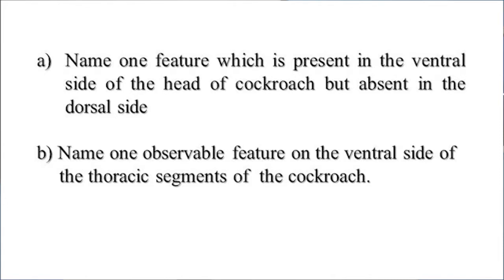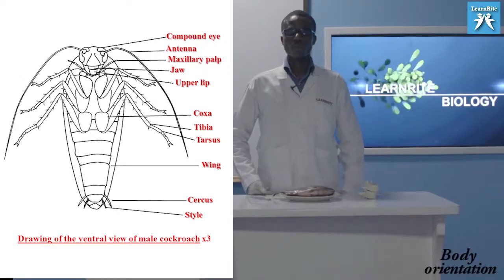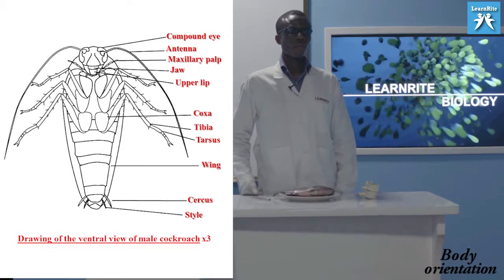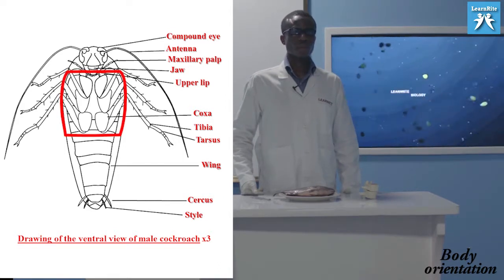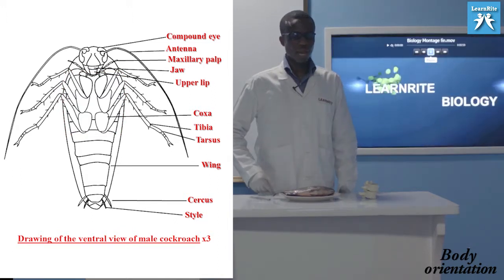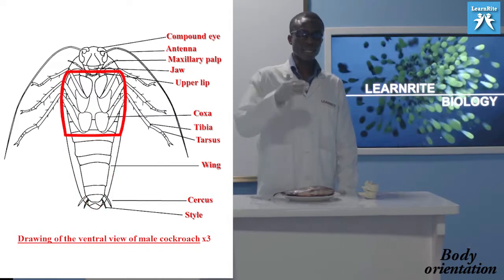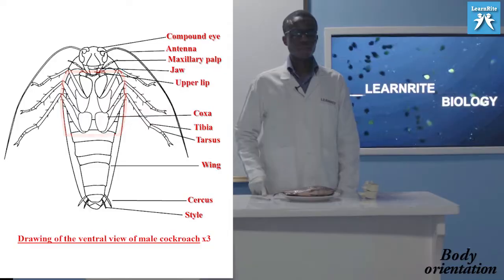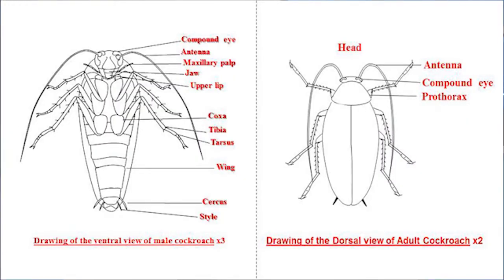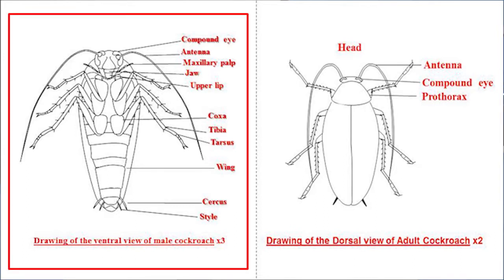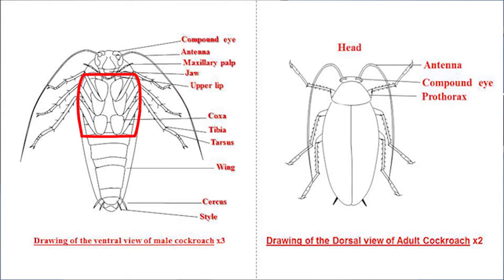Let's look at the next part of the question: name one observable feature on the ventral side of the thoracic segments of the cockroach. All insects are made up of three body parts: the head, the thorax, and the abdomen. Where the legs are attached is the thoracic region. If you look at the ventral view of the cockroach, you can see components attached to the thoracic part — you can see the legs. You cannot see the legs on the second diagram, the dorsal view.